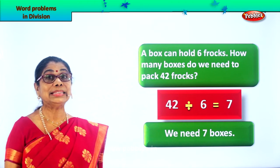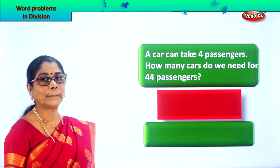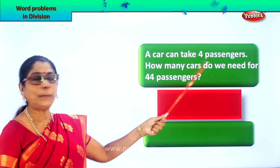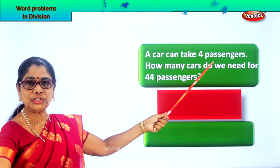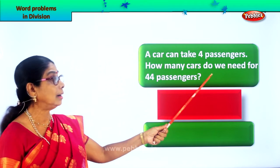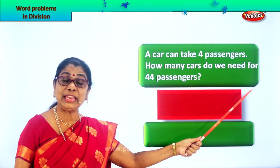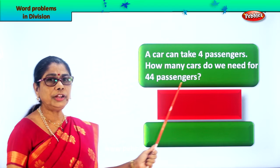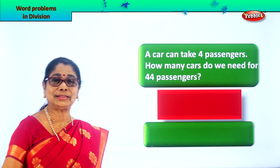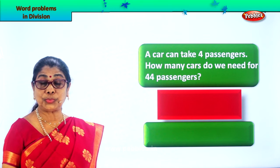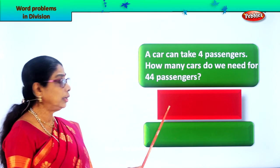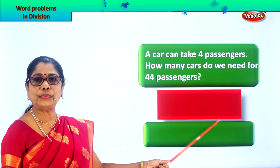Let's read: a car can take 4 passengers. How many passengers will go into 1 car? 4 passengers. How many cars do we need for 44 passengers? One car holds 4 passengers — we have 44 passengers, so we have to find out how many cars to call. 44 divided by 4.